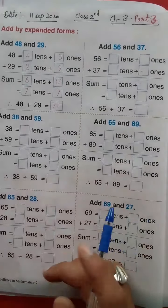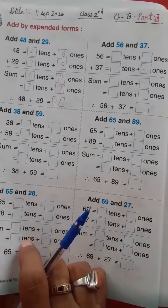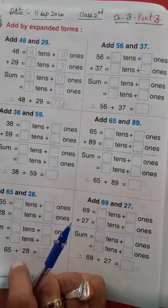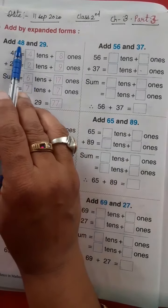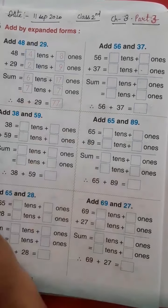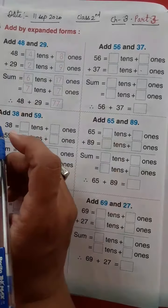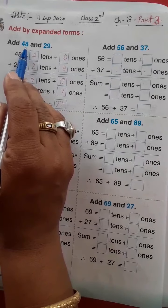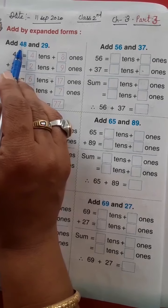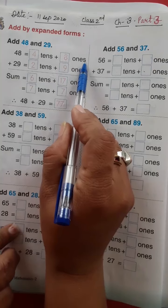Good morning students. Now next topic, add by expanded form from page number 60, chapter number 3. First add 48 and 29. Now 48 plus 29, isko hum expand form me likhenge. Yani 2 digits hai, toh 8 digit ones ki place pe aur 4 digit tens ki place pe. At ones place we will write 8, and at tens place we will write 4.